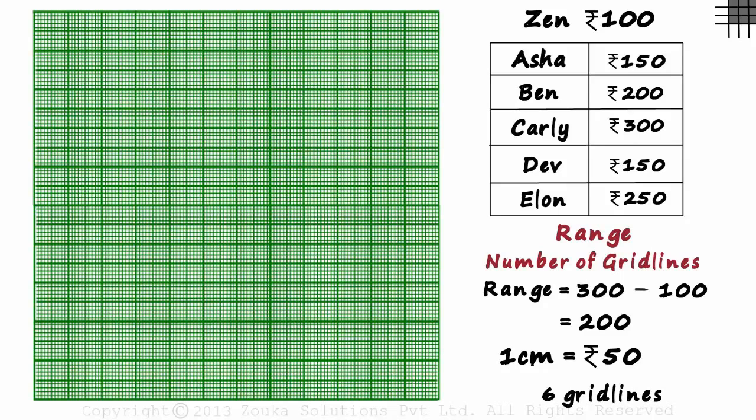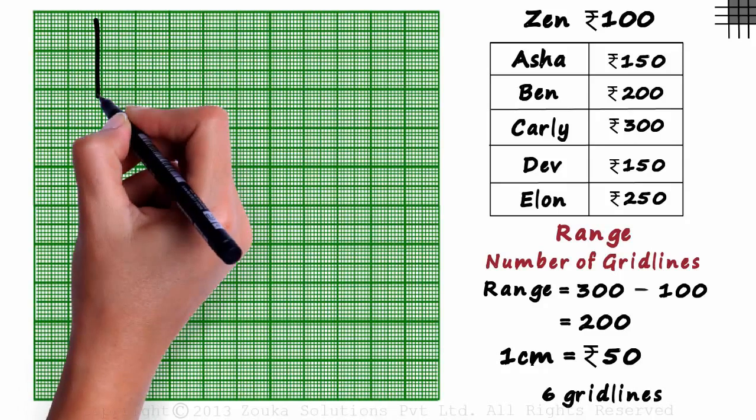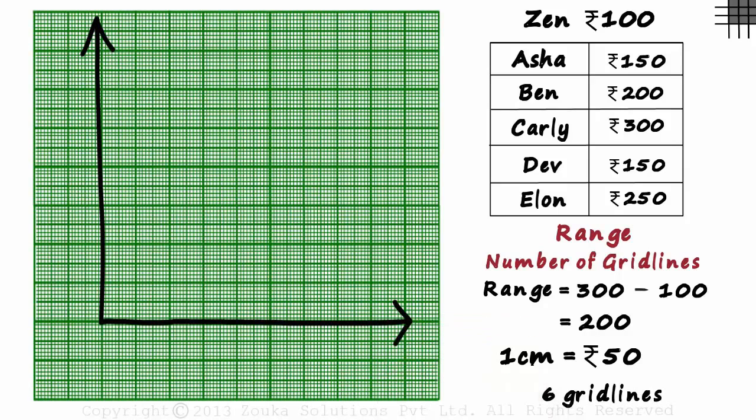Now that we have chosen the scale, we draw the x and the y-axis. We have the name of the kids on the x-axis and the weekly allowances of each of the kids on the y-axis.